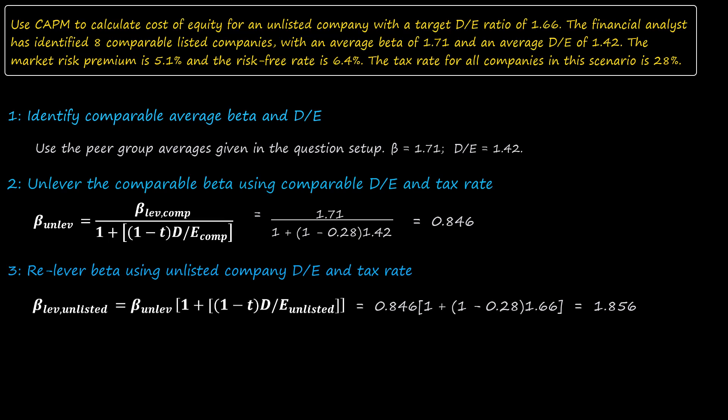Finally, we use our estimated beta in the CAPM equation. We plug in the risk-free rate of 6.4%, the beta of 1.856 we have just calculated, and our knowledge that the market risk premium is the difference between the market return and the risk-free rate, in this case, 5.1%. Therefore, the unlisted company's cost of equity is 15.9%.